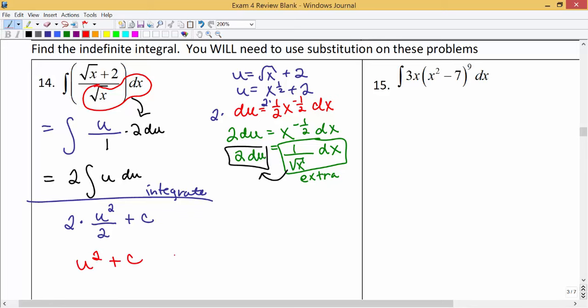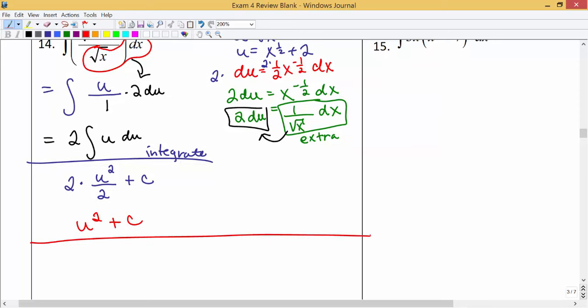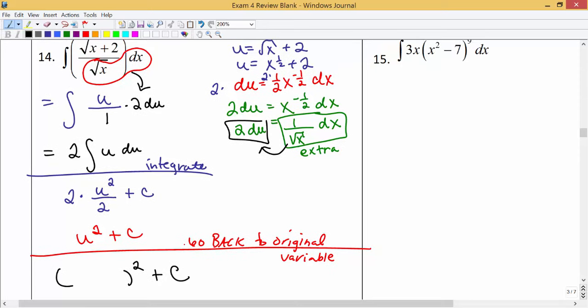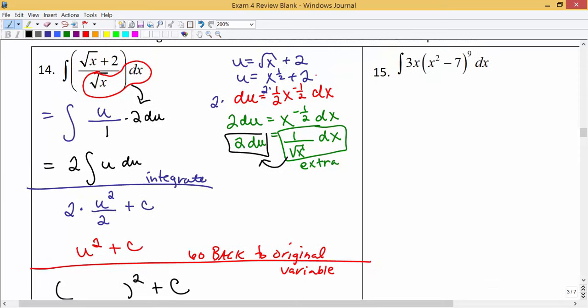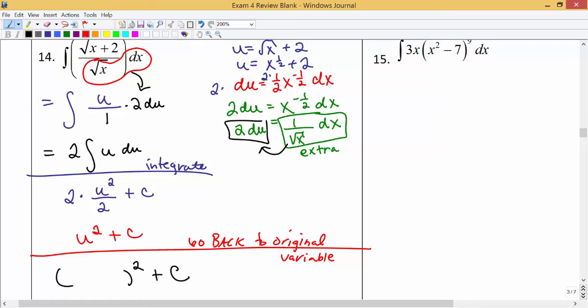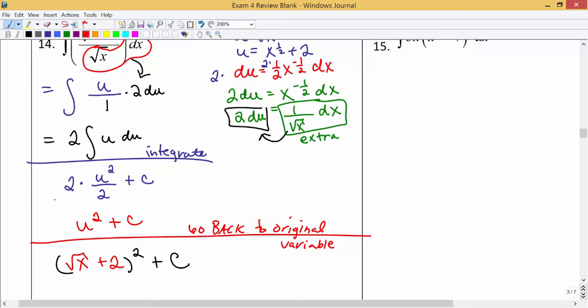The last thing we want to do is go back to the original variable. We're going to replace the u with what u actually represents. So u squared plus c, and we said u represents the square root of x plus 2, so I'm going to put into my parentheses the square root of x plus 2. This would be our final answer.